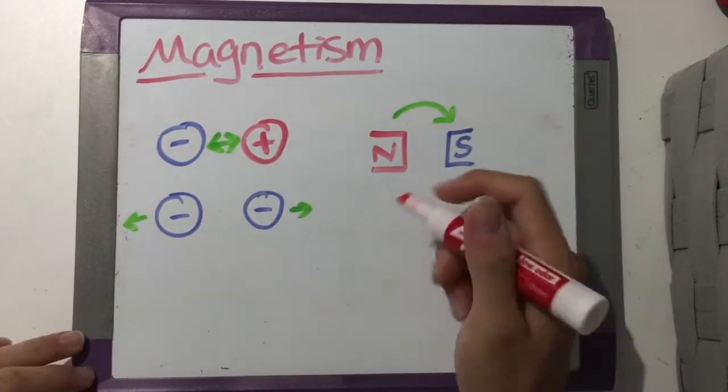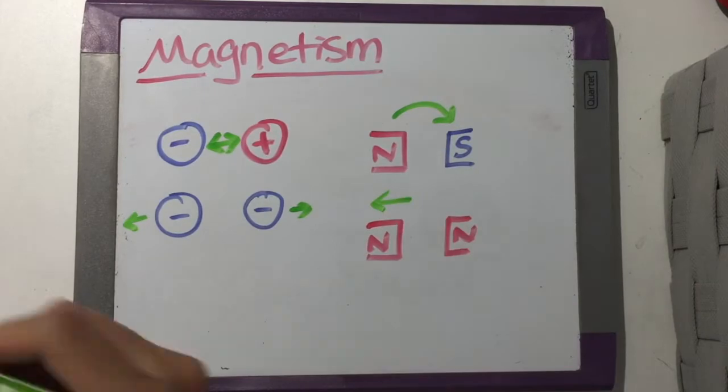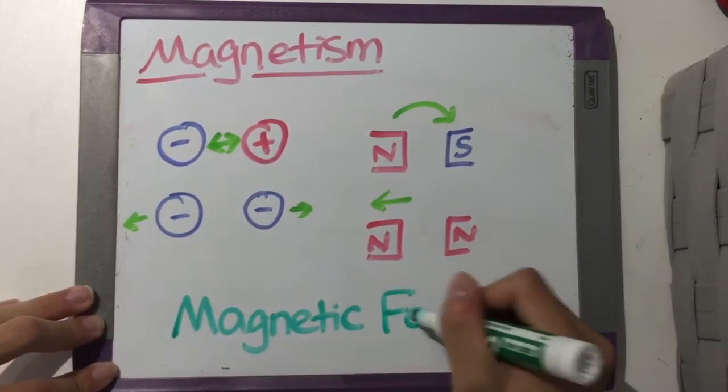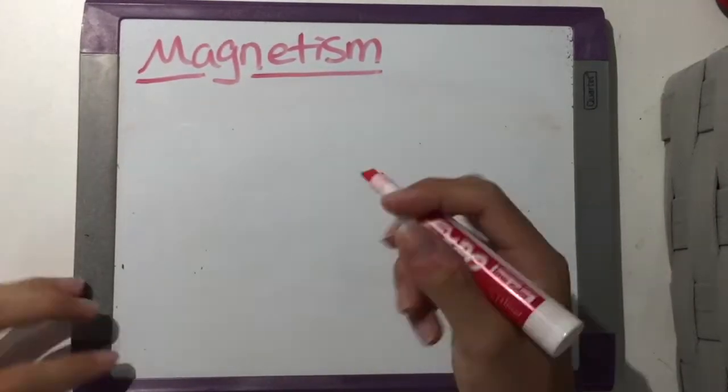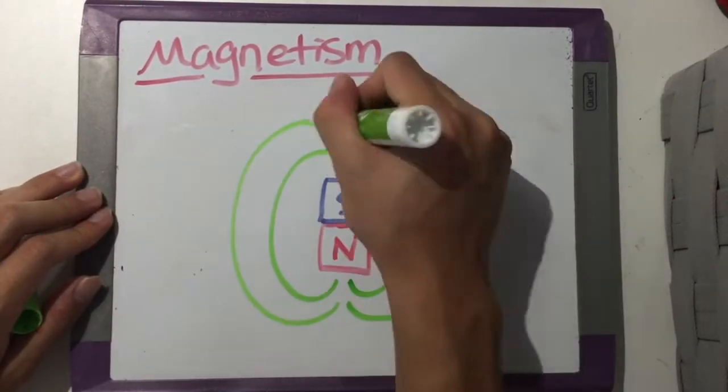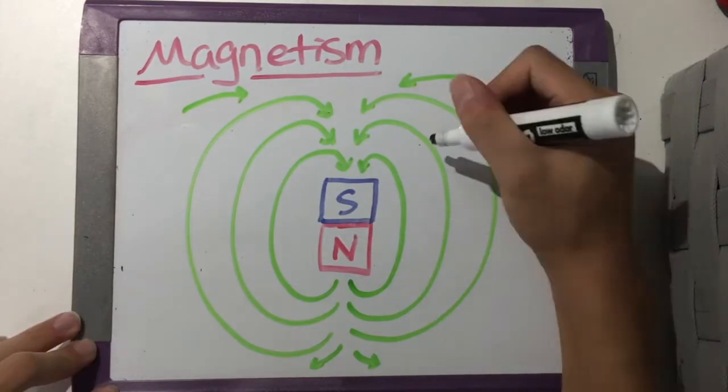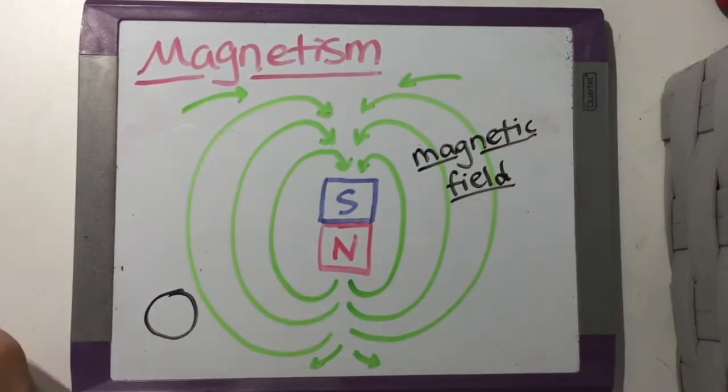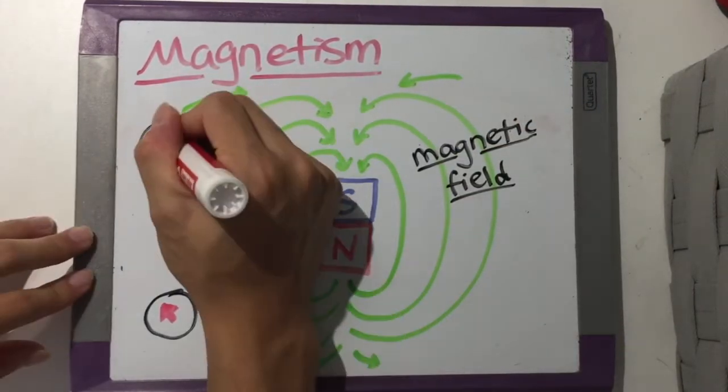Every single magnet produces a magnetic force that attracts or repels other magnets. The region that their magnetic force affects is called a magnetic field, which usually goes from north to south. The needle in our compasses will always point towards the direction of the magnetic field.